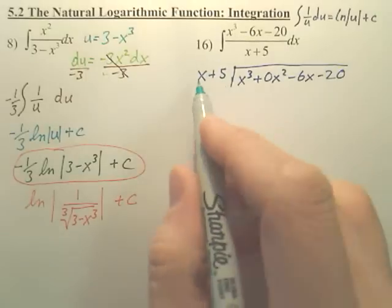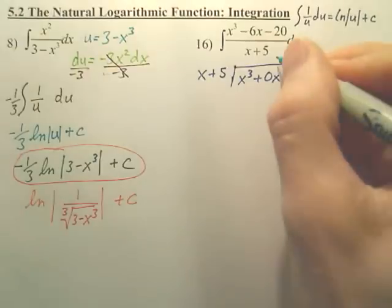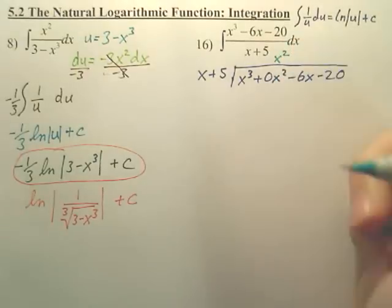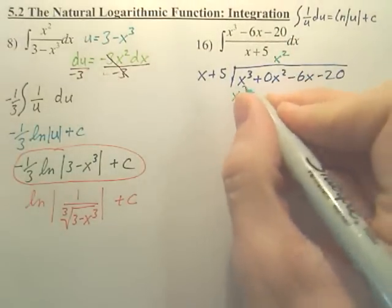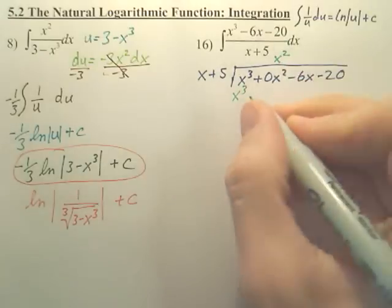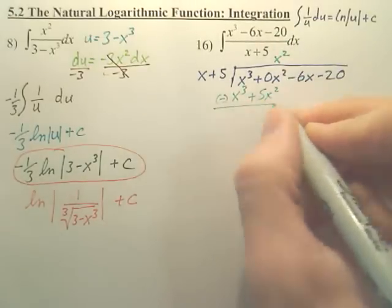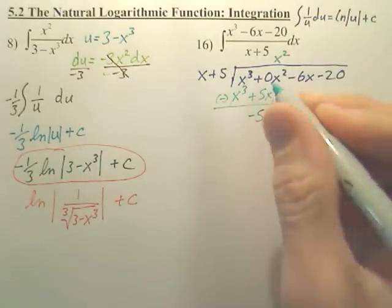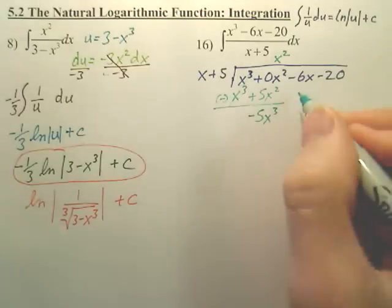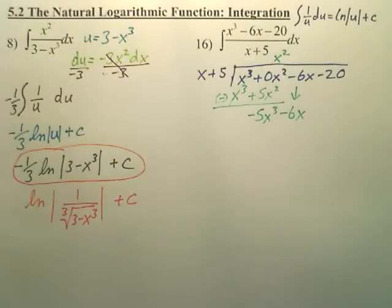So how do we do long division again? What times x gives us x to the third? That would be x squared. And then you go x squared times x gives us x to the third, and x squared times 5 gives us 5x squared. And then we subtract down. It's gone. A lot of people mess up because they don't subtract down. They make that a positive 5x cubed.